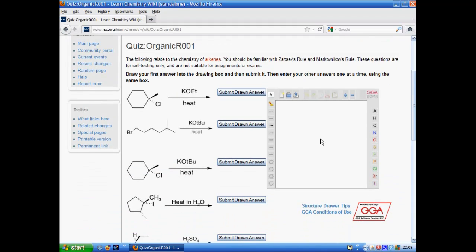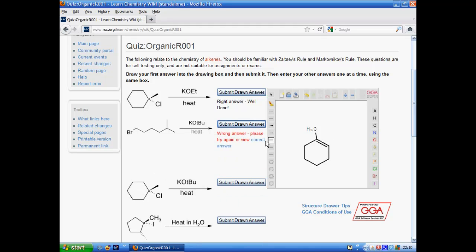We can see the same structure drawer frame that we had in the structure search. But this time when we draw in a compound it's the answer to that first question at the top, and you're drawing in the product of the reaction shown. You just draw in the structure that you think is the answer and click on the submit button. To answer the second question you just draw in the new structure. In this case we got it wrong and we can view what the correct structure should have been.